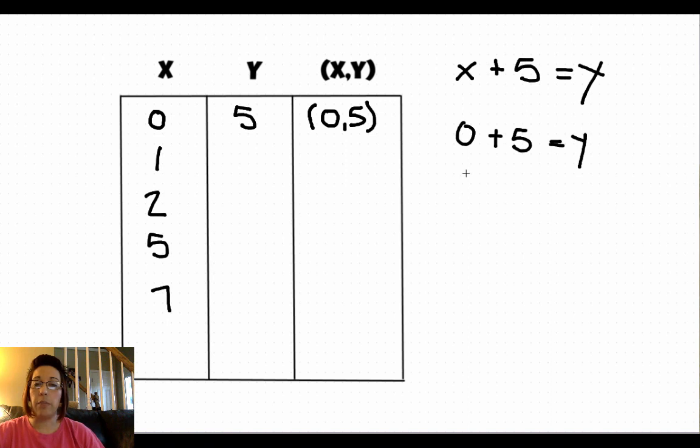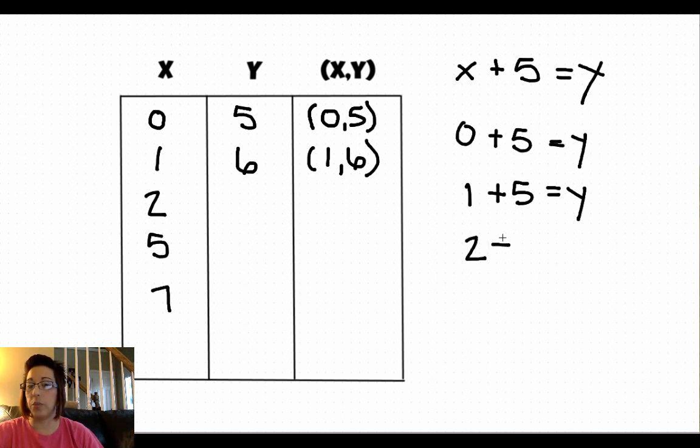So if we go ahead and plug 1 in for x, 1 plus 5 equals y. Well, 1 plus 5 is 6. And our ordered pair would be 1, 6. Again, we continue. We're going to plug 2 plus 5, 7.